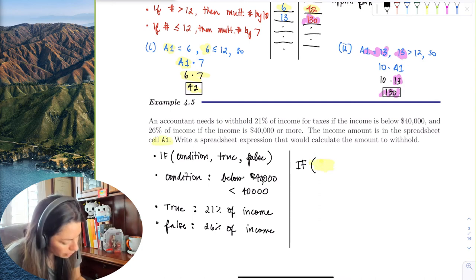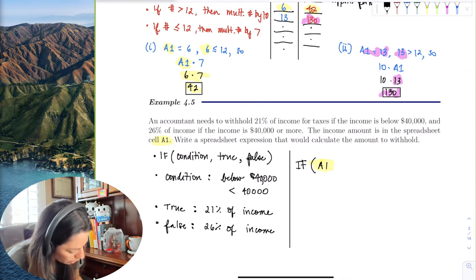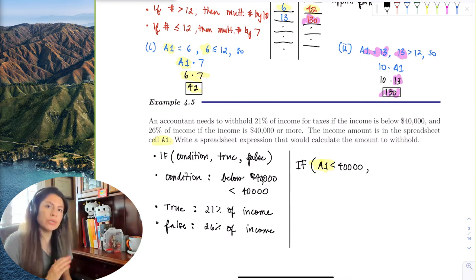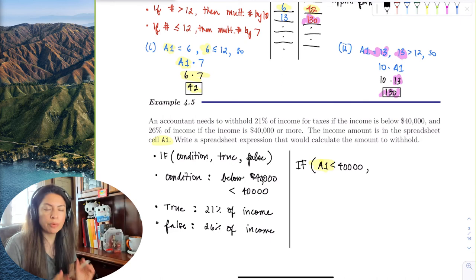In the spreadsheet we do not use commas because the commas are already taken to separate the true and false condition statements.